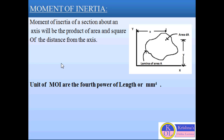So we can see the moment of inertia of a section about an axis is the product of area and the square of the distance from the axis. According to that, if the length is in mm, then the unit of moment of inertia will be the fourth power of the length, so the unit will be mm to the power of 4.